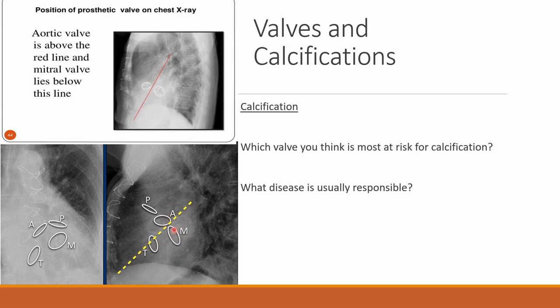You will not be able to see any valves on lateral radiography unless they have been calcified. It is this calcification — due to increased density — that the X-ray can pick up as a radio-opacity. Now, which valve do you think is most at risk for calcification?